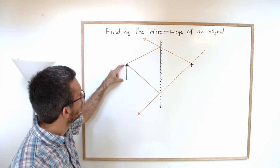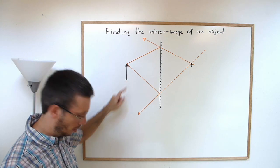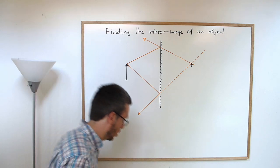To find the whole arrow, I need to repeat the procedure for the bottom point. So I'm going to take another color here and do the same thing.